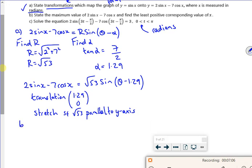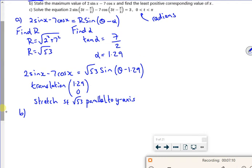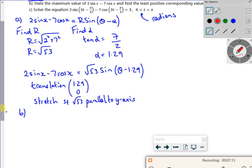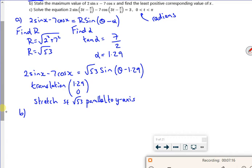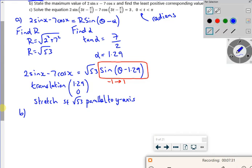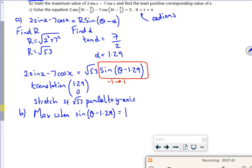Part B says state the maximum. So the maximum, if you remember from the max and min stuff we talked about, is when that bit is either minus 1 or 1, or possibly 0 to be a bit steeper. So you've just got to see what gives you the biggest number overall. So in this case specifically, it gives us the biggest number, the max, where the sin of theta minus 1.29 is equal to 1. So my max value is root 53 times 1, which is root 53.